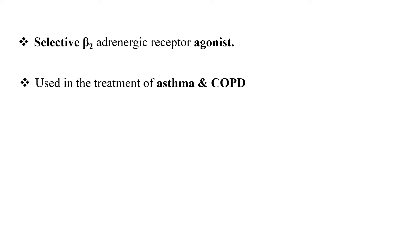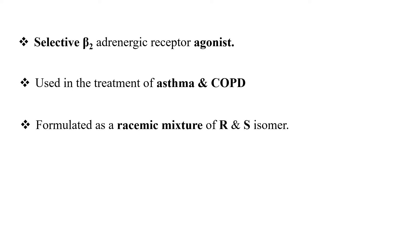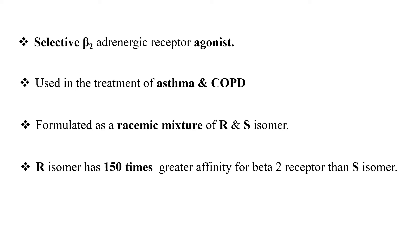Salbutamol is a selective alpha-beta-2 adrenergic receptor agonist. It is used in the treatment of asthma and chronic obstructive pulmonary disease. It is formulated as a racemic mixture, that is R and S isomers. The R isomer has greater affinity for the beta-2 receptor — 150 times greater affinity than the S isomer — whereas the S isomer is associated with toxicity.